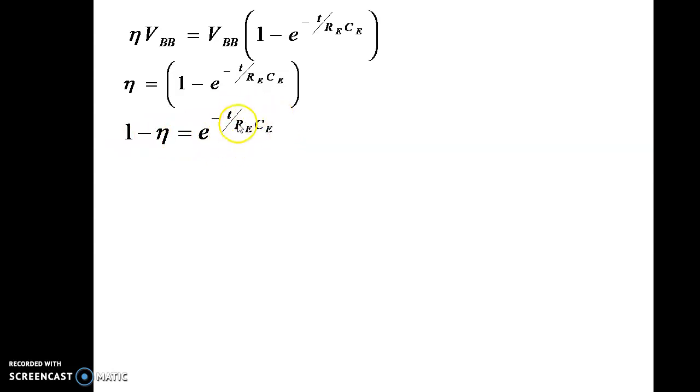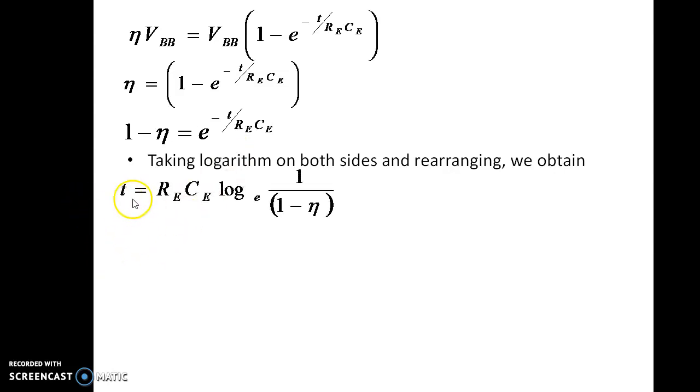Our aim is to obtain an expression for the frequency of oscillation, which means we should get an expression for T. We have to rearrange this. Take logarithm on both sides and rearrange it. We obtain T equal to REC log to the base E 1 by 1 minus eta. If we change the base to 10, the expression changes to T equal to 2.303 REC log 10 1 by 1 minus eta.